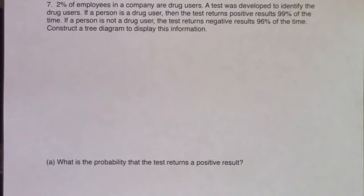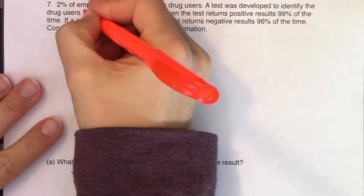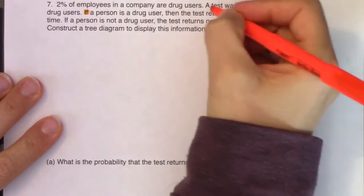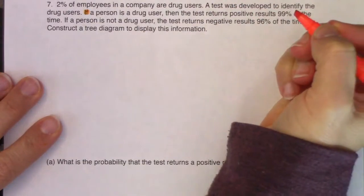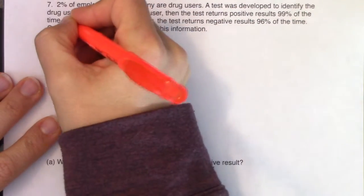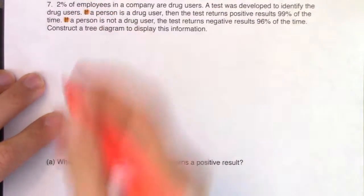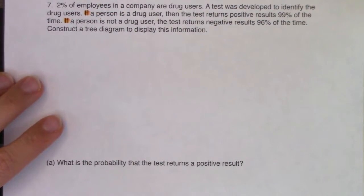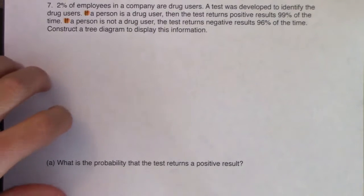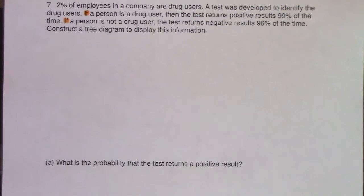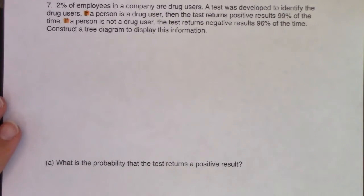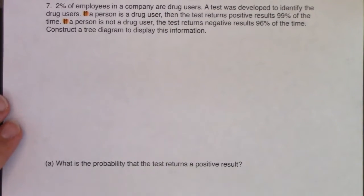A couple of things I notice when reading through this: I see the word 'if' here — those are conditional phrases. So I just want to be aware of that. That means they're going to go on the second set of branches, because the second set of branches are always your conditional statements.